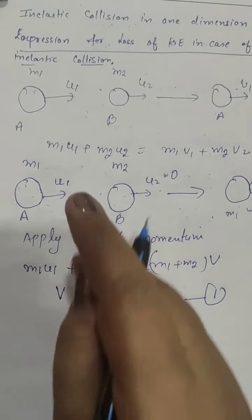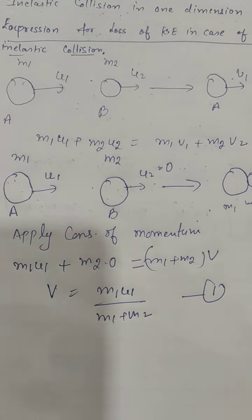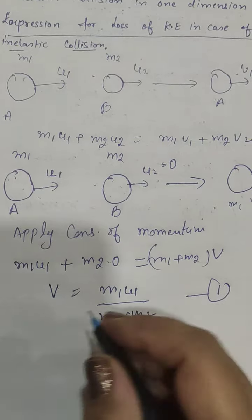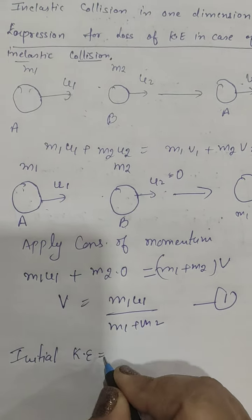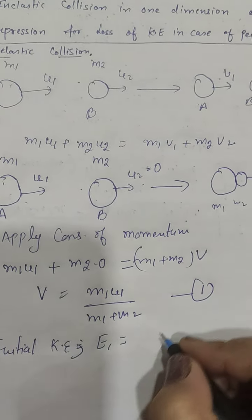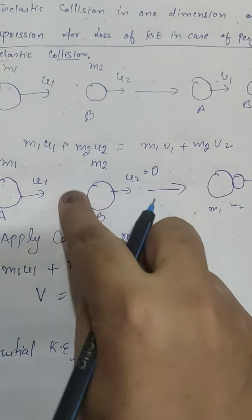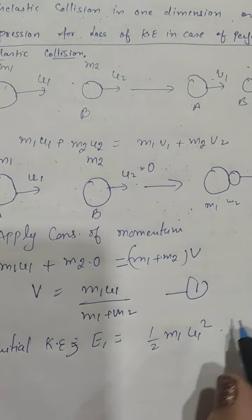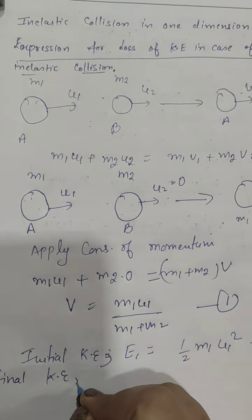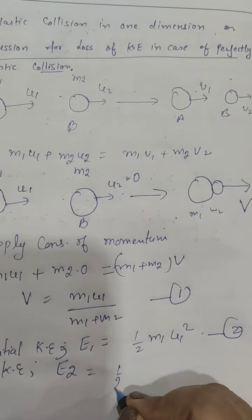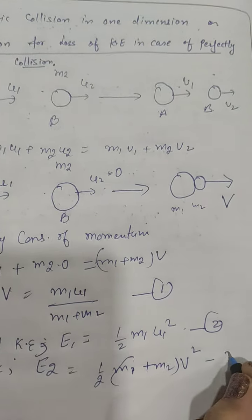Since there is a loss of kinetic energy, we cannot apply conservation of kinetic energy, but we can find initial and final kinetic energies. Initial kinetic energy E1 equals (1/2)·m1·u1², plus zero since body B is at rest. Final kinetic energy E2 equals (1/2)·(m1 + m2)·v².